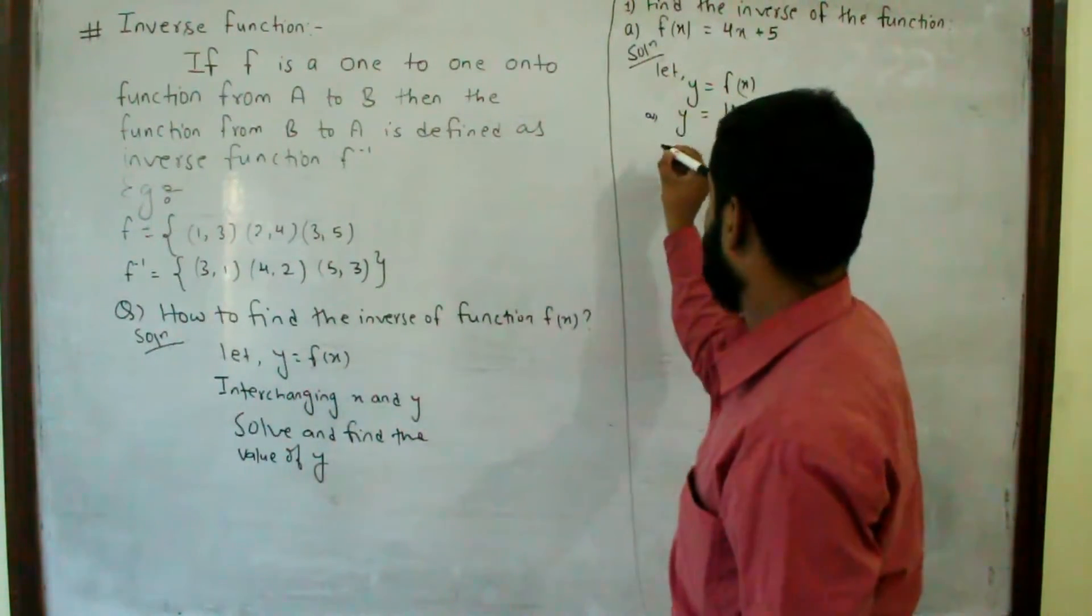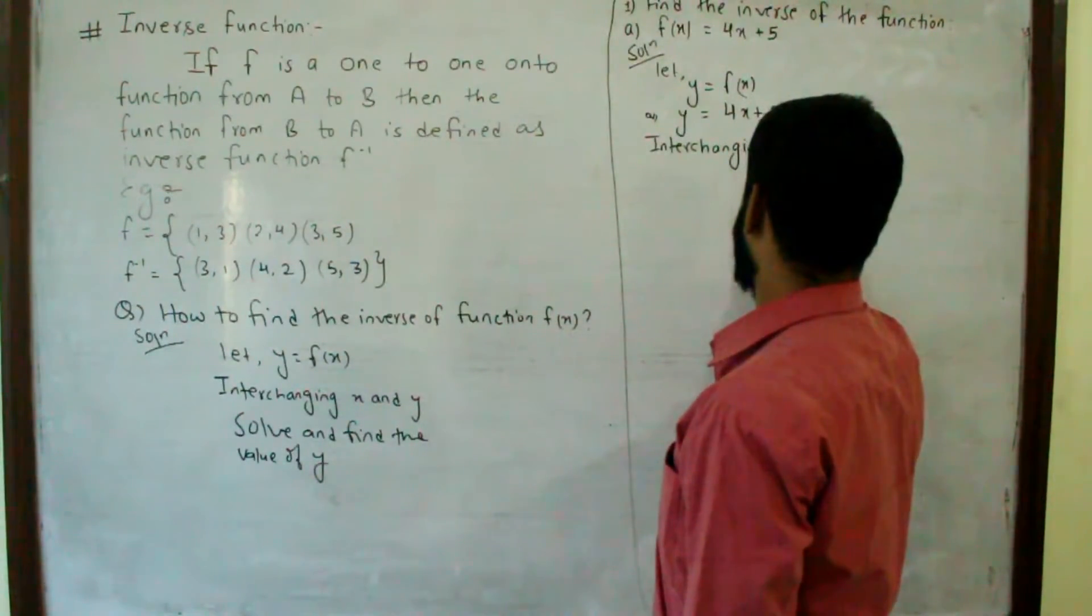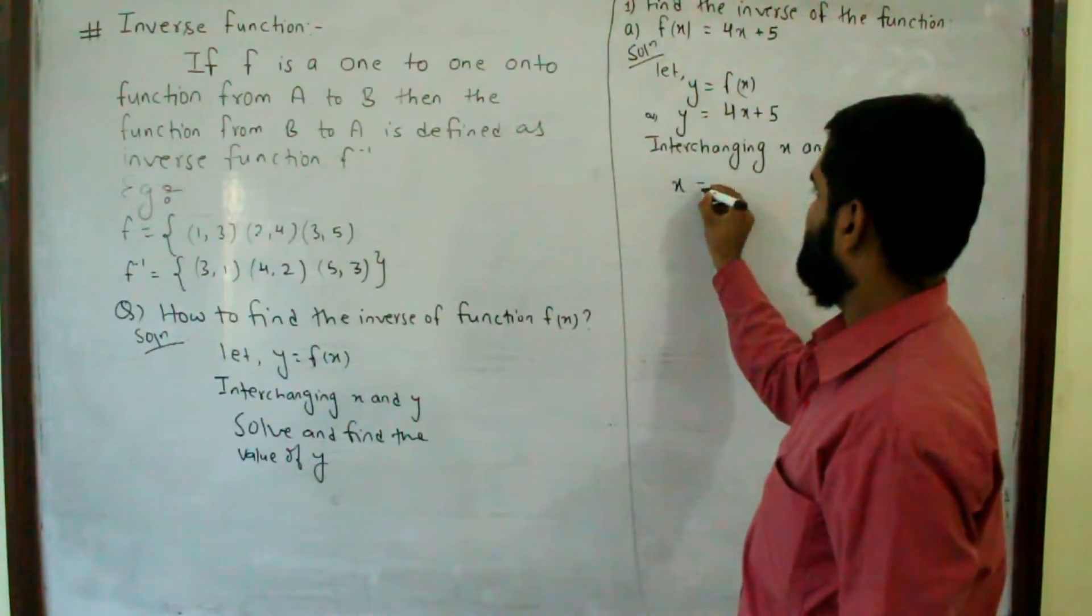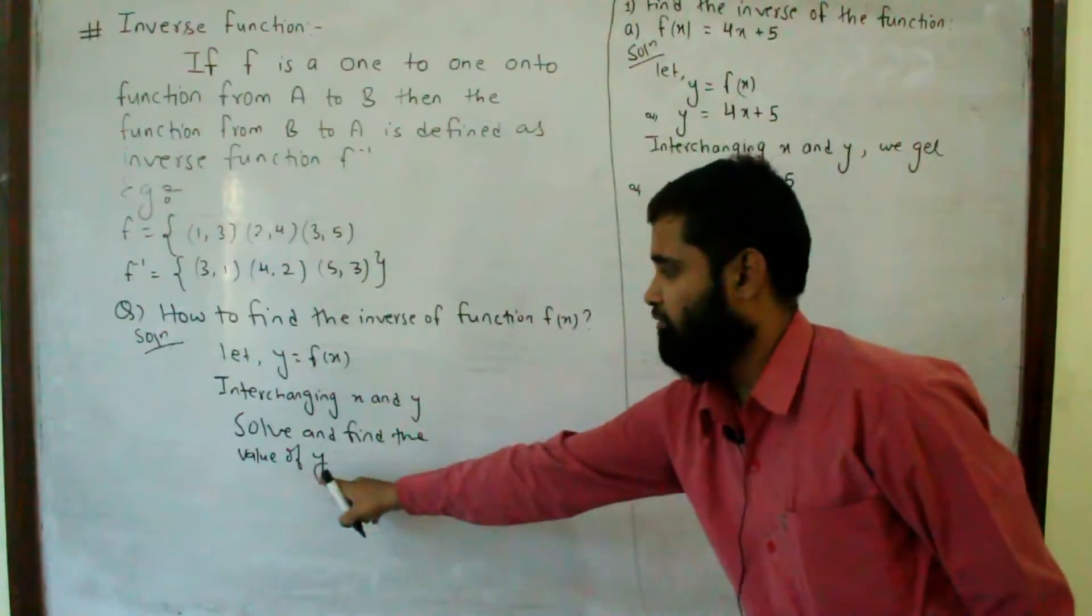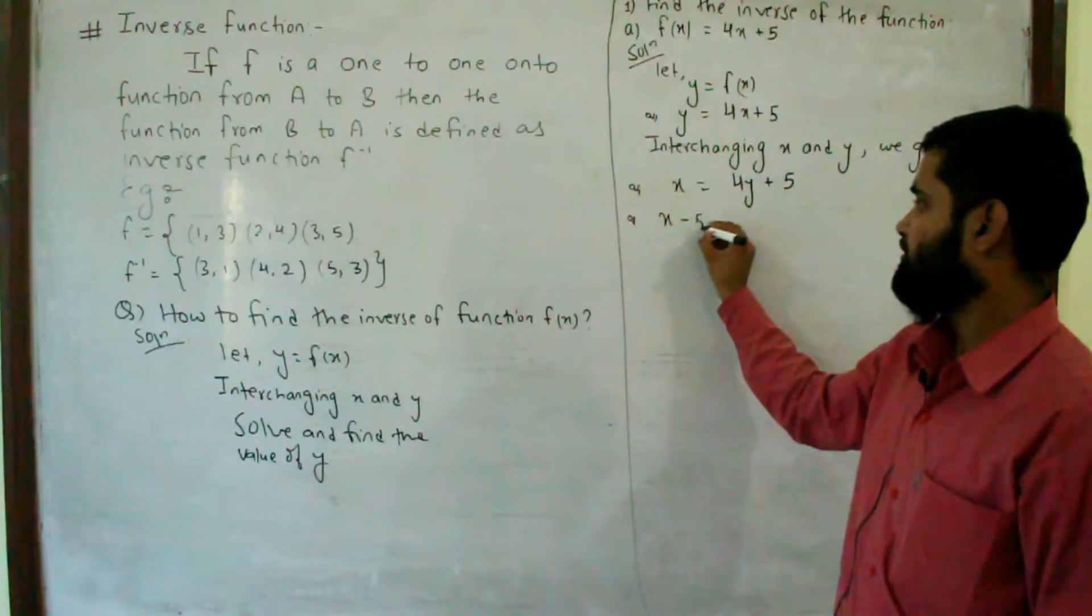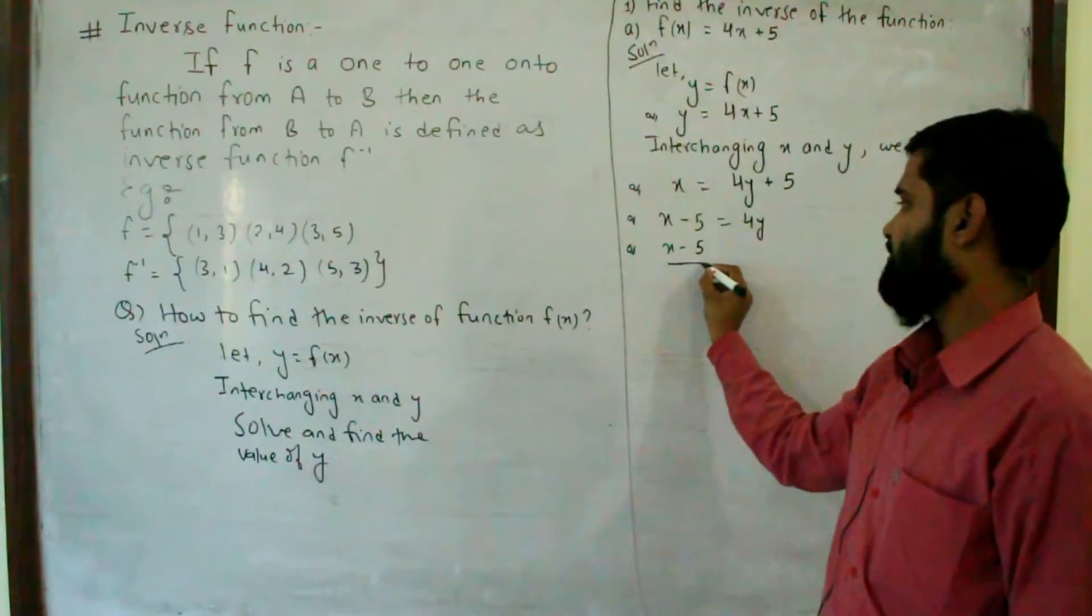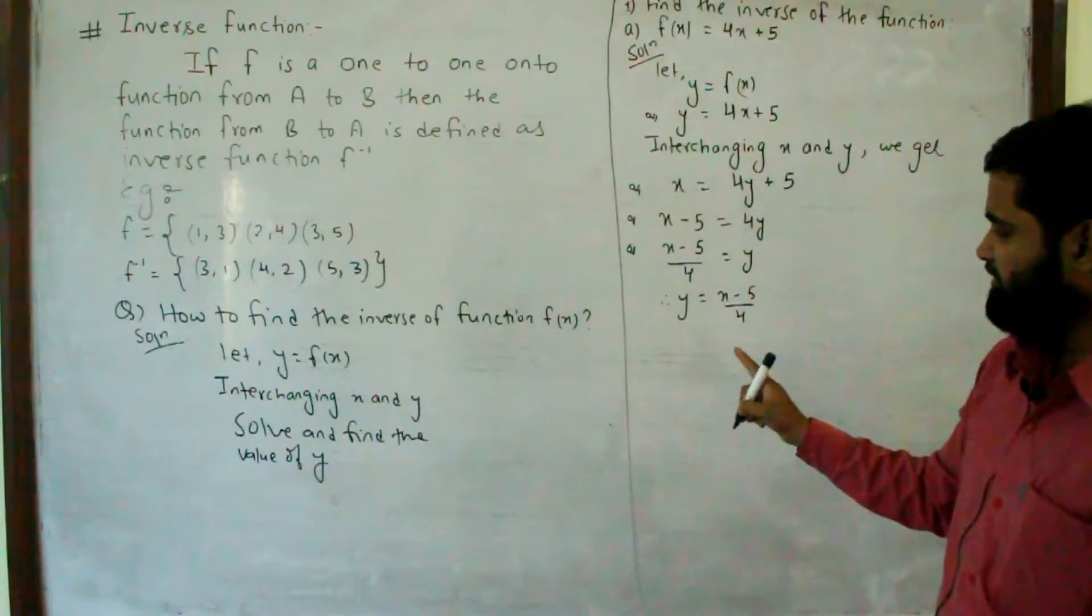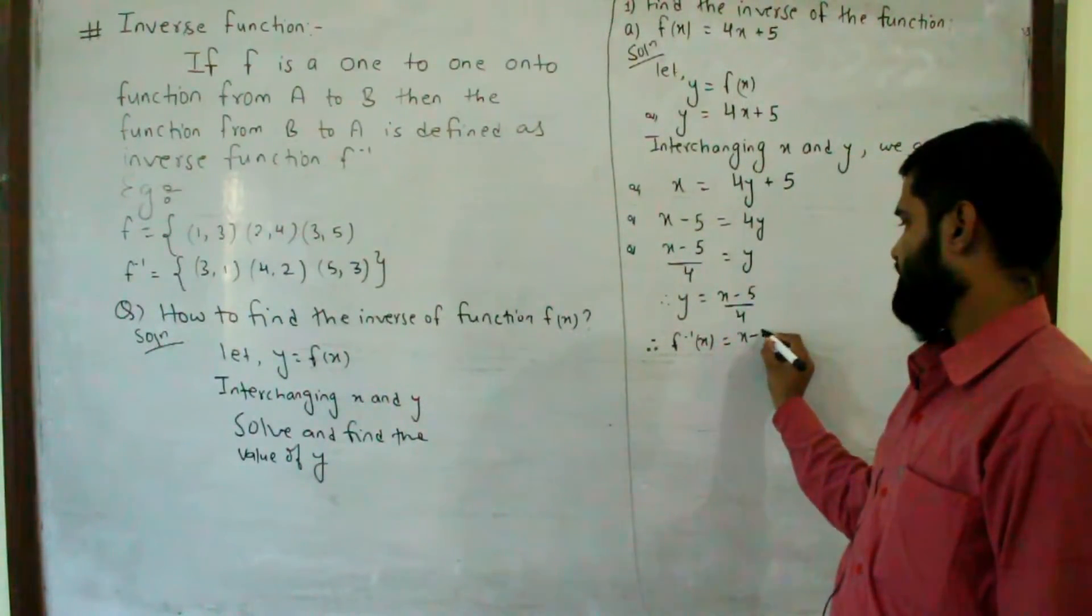Interchanging x and y, we get x equals 4y plus 5. Solve and find the value of y. Moving 5 to the other side: x minus 5 equals 4y. Dividing by 4: y equals (x minus 5)/4. Therefore, f inverse x is equal to (x minus 5)/4.